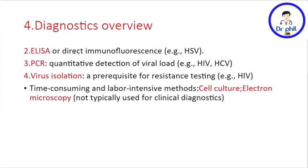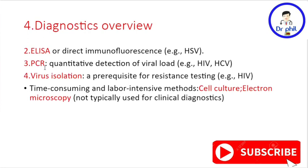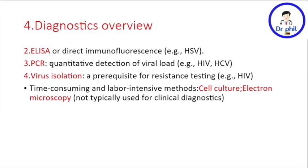Other diagnostic methods include ELISA — enzyme-linked immunosorbent assay — and direct immunofluorescence, both based on antibody detection. The polymerase chain reaction (PCR) is used to detect the actual DNA or RNA of the virus; for example, in HIV and HCV infections it is used for quantitative detection of viral load. Viral isolation is used as a prerequisite for resistance testing, for example in HIV. More time-consuming methods like cell culture and electron microscopy exist but are not typically used for clinical diagnosis.